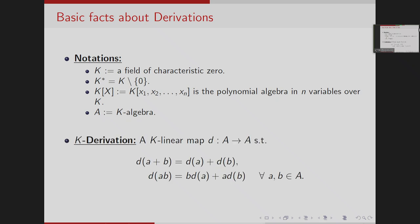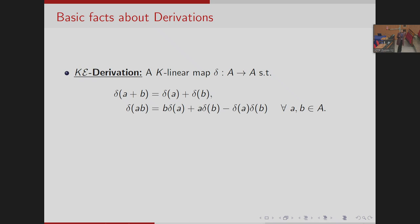A k-derivation is a k-linear map D from A to A such that D(a+b) = D(a) + D(b), and D(ab) = b·D(a) + a·D(b). This is called a k-derivation of A. Further, a k_e-derivation is again a k-linear map delta from A to A such that delta(a+b) = delta(a) + delta(b), and delta(ab) = b·delta(a) + a·delta(b) − delta(a)·delta(b), for all a and b in A.